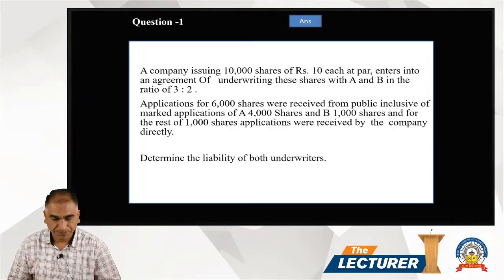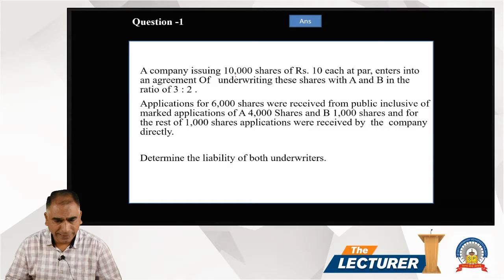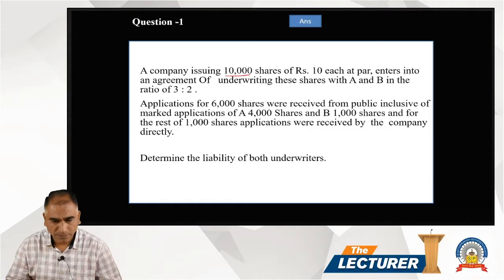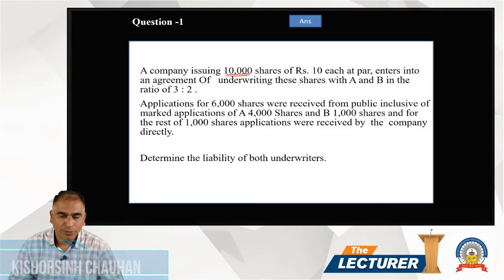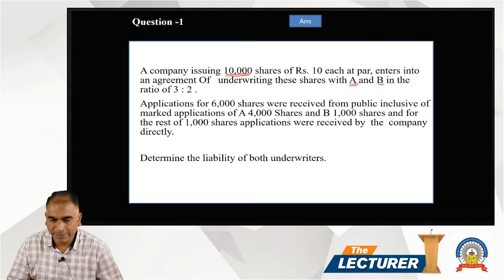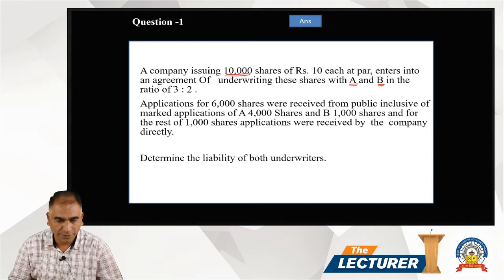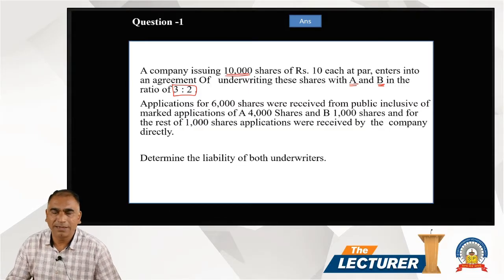Let's have question number one. A company has issued 10,000 shares of rupees 10 each at par and entered into an arrangement of underwriting these shares with Mr. A and Mr. B in the ratio of 3:2.